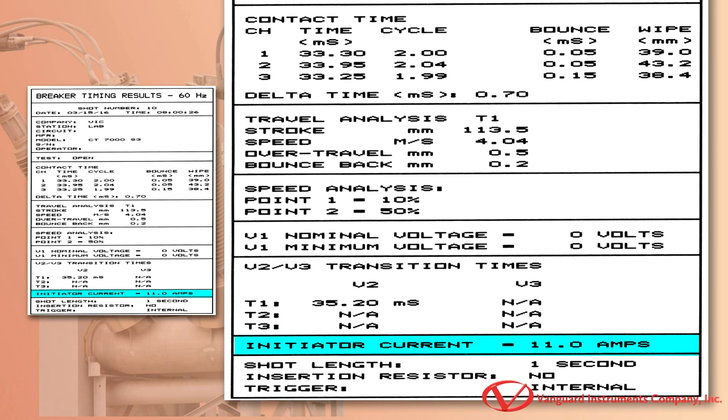The measured open coil current is shown here. For this example, the initiate current was 11 amps.